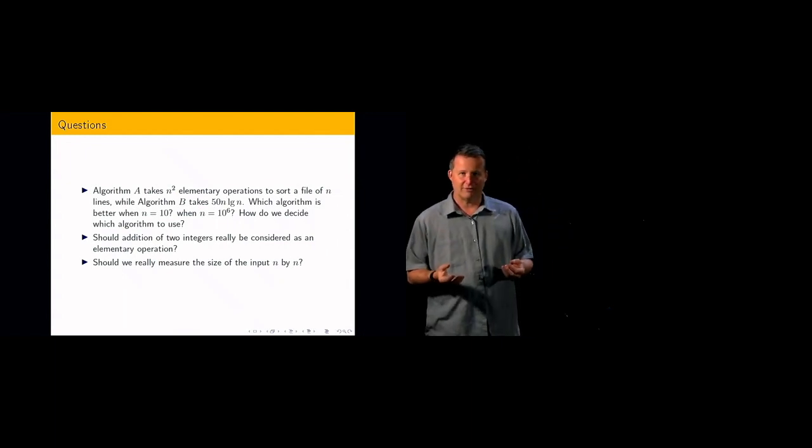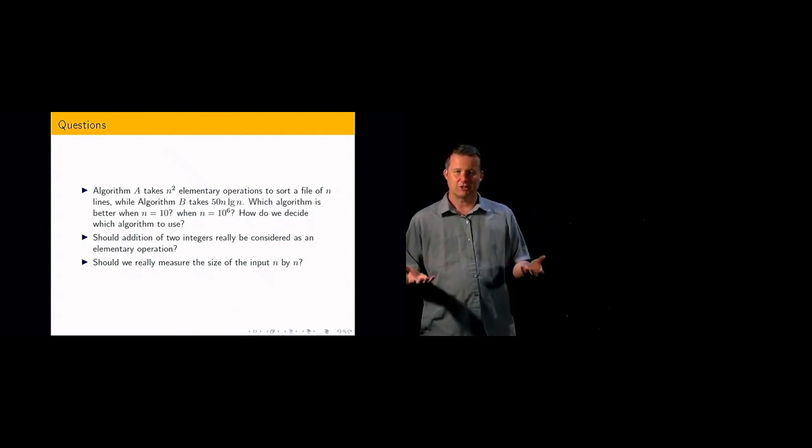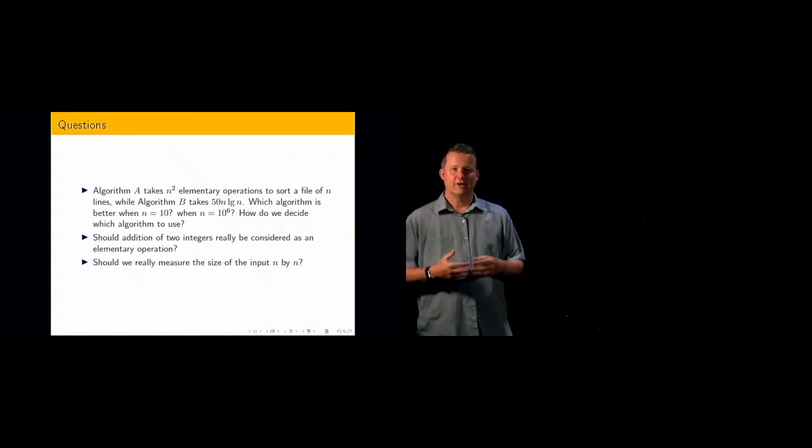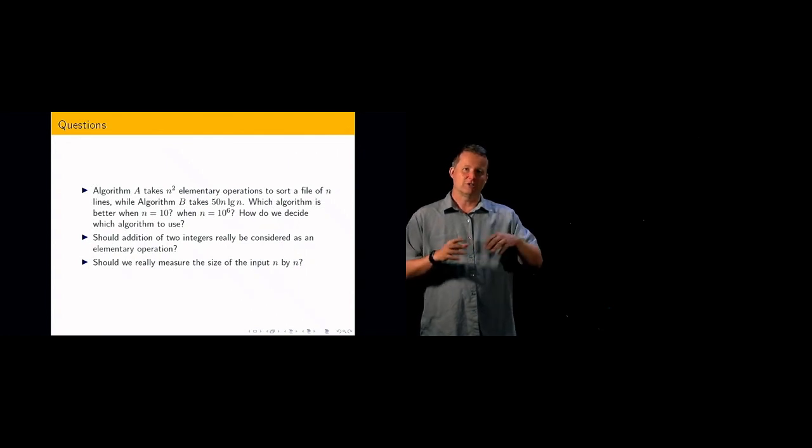If we're looking at f of n, the nth Fibonacci number, I said that the input is the integer n. And implicitly I was using n as the size of that integer. I was saying that the running time is basically scaling like some constant times n, plus some other constant, a n plus b, something like that.